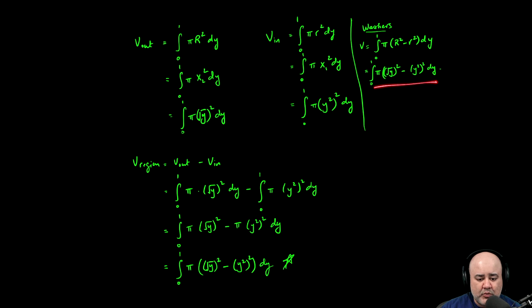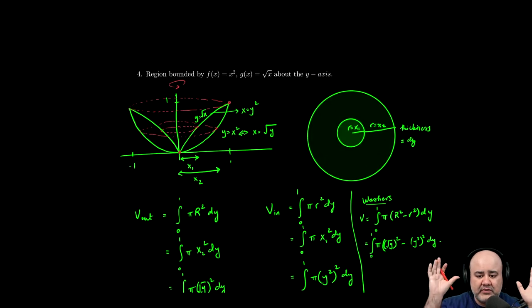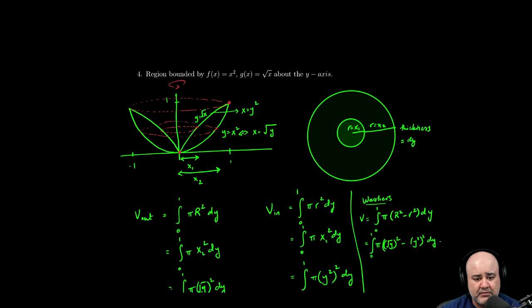The purpose of this video was to make you understand and hopefully make you see that the washer method is nothing other than the disk method used on the outside shape minus the disk method used on the inside shape. And if you take the larger volume and you subtract from it the smaller volume, you get the answer you're looking for.